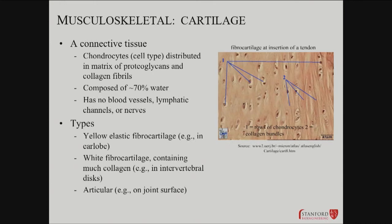There are different kinds. There's yellow elastic or fiber cartilage, and that's like what's in your ear lobe. Then you've got load-bearing white fibrocartilage that's in your intervertebral discs, and finally you've got articular cartilage that's designed to be very slippery and allow bones to rotate on them. That's articular cartilage on joint surfaces.